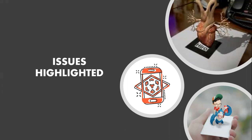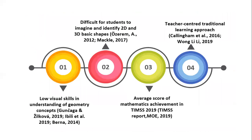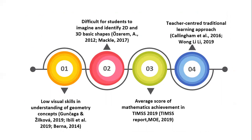Now we are going to note the issues highlighted to develop this app. Based on previous studies, the main problem is the low visual skills in understanding geometric concepts. Therefore, it is difficult for students to imagine and identify two-dimensional and three-dimensional basic shapes, based on L0 and MECOL 2017. Besides that, the average score of mathematics achievement in TIMSS 2019, based on the TIMSS report from Malaysia's Ministry of Education 2019, was also a concern. And lastly, the teacher-centered traditional learning approach is still being applied by teachers.